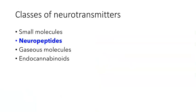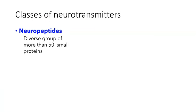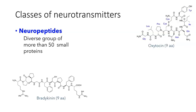The second broad class of neurotransmitters are neuropeptides — a diverse group of more than 50 small proteins. How small is small? Oxytocin and bradykinin are both 9 amino acids long. You can actually see this for oxytocin where the individual amino acids are indicated: glycine, leucine, proline, cysteine. These really are literally small proteins.